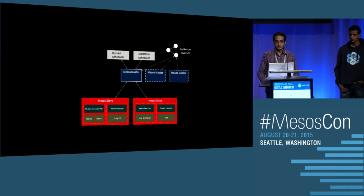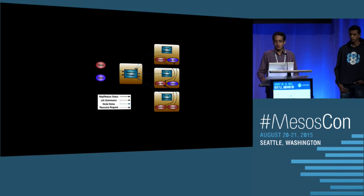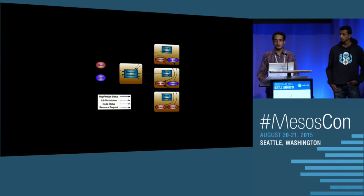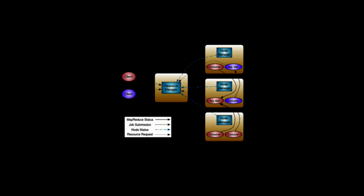Comparing to Yarn: Yarn has a resource manager, which is very similar to a Mesos master — aware of all resources and able to schedule tasks. The node manager is very similar to a Mesos agent, reporting resources back and assisting in launching tasks. Yarn also has an app master, which is similar to a Mesos framework but not exactly — the key difference is the app master only expresses an intent to launch tasks but doesn't do any scheduling. All scheduling is done by the resource manager itself, making it a monolithic scheduler.